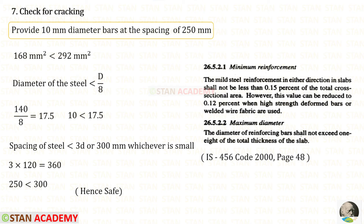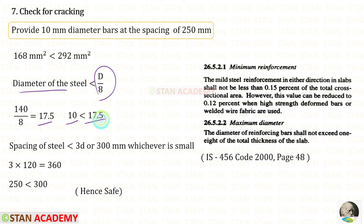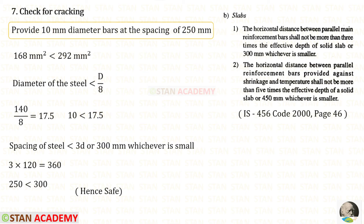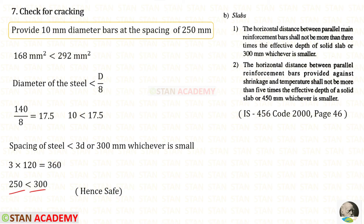Now we apply the check for cracking. The minimum Ast has already been verified. The bar diameter must be less than overall depth divided by 8, giving 17.5 mm. Our diameter is 10 mm, which is less than 17.5 mm, so it is safe. For the spacing check, the maximum allowable spacing is 300 mm, which is less than 3D. Our spacing of 250 mm is less than 300 mm, so it is also safe.